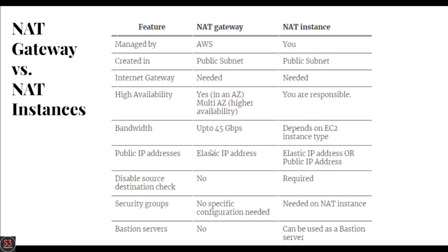For public IP addresses, NAT gateway uses elastic IP addresses, while NAT instances can use elastic IP or public IP. For source/destination check, in NAT instances you have to disable that setting, but in NAT gateway you don't require it. For security groups, NAT gateway needs no specific configurations, but NAT instances need a specific security group. Finally, NAT instances can be used as a bastion host server, whereas NAT gateway cannot.